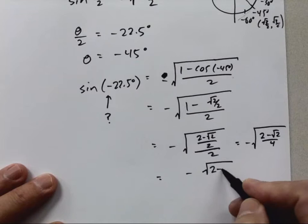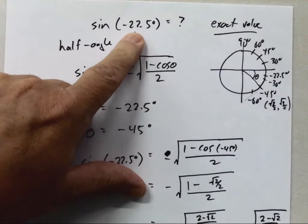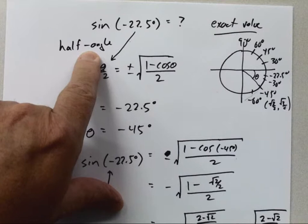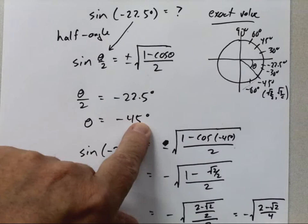To review: negative 22.5 is not a special angle, so I'm stuck. But using the half-angle formula, I call the given angle theta over 2, which means theta is negative 45. When I plug into the half-angle formula, I end up with cosine of a special angle and can plug in numbers to get the exact answer.